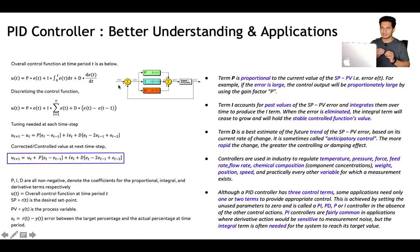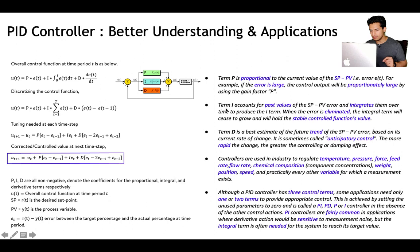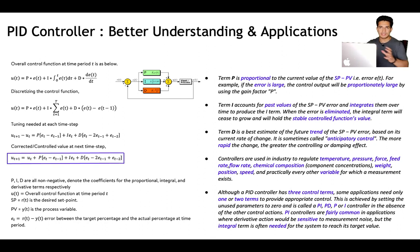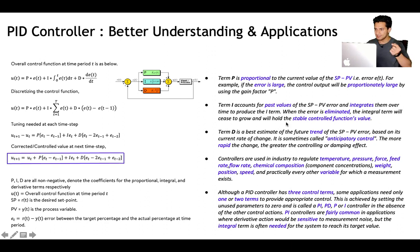Looking at each term in more detail: term P is proportional to the current error (SP minus PV) — if the error is large, the control output will be proportionally large using the gain factor P. Term I accounts for past values of the error, integrating it over time; when the error is eliminated, the integral term ceases to grow and holds the stable control value. Term D is the best estimate of future trend — also called anticipatory control — the more rapid the change, the greater the damping effect.